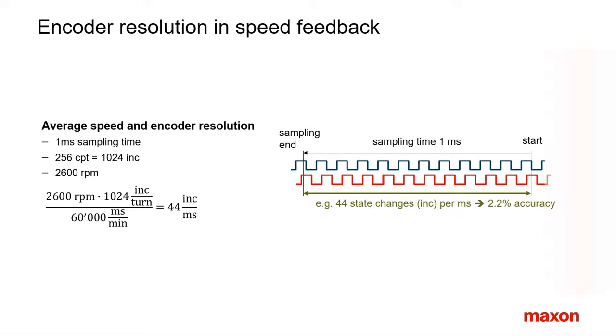This results in about 44 increments per millisecond. The quantization of speed measurement is one increment per millisecond, corresponding to a speed resolution of 58 rpm or a little bit more than 2% of 2600 rpm.